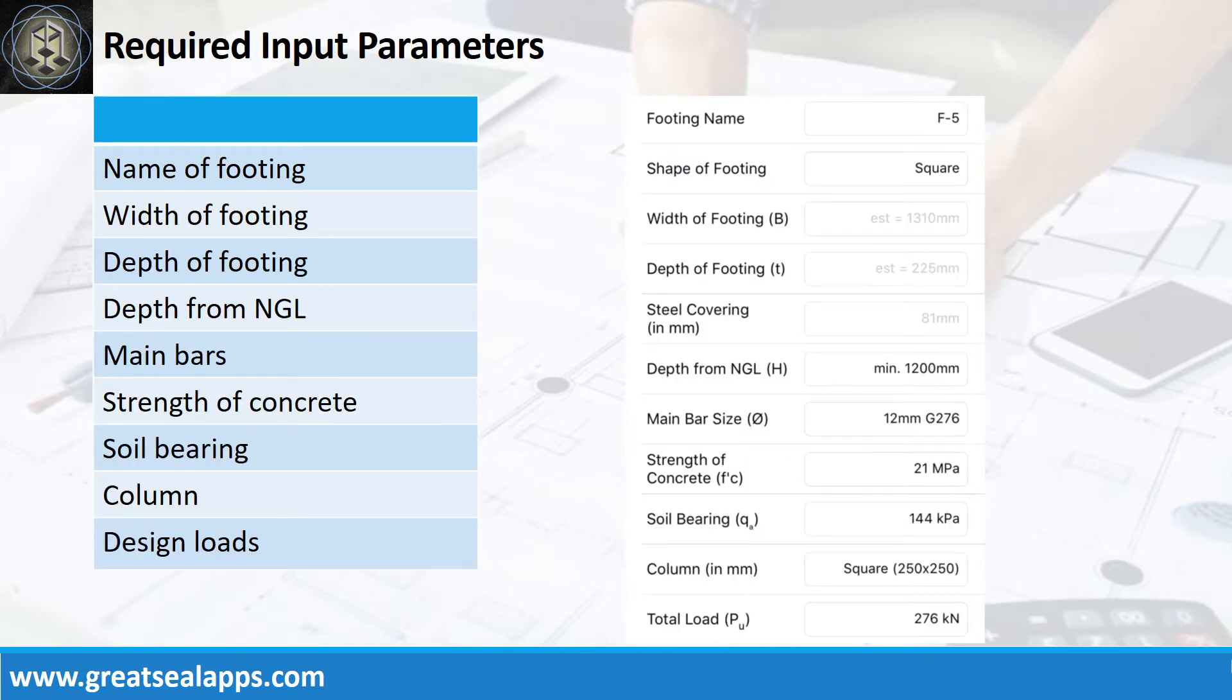Enumerate input parameters required: Footing name, F5; shape of footing, square; depth from natural grade line, 1,200 mm; main bars, 12mm bar at grade 276.